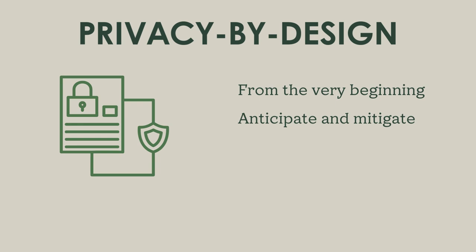One of the main objectives of privacy by design is to ensure that personal information is collected and processed in the least invasive way possible. For example, when developing a new system or service that involves the collection of personal information, the organization must carefully evaluate which pieces of information are actually necessary for the intended purpose, so as to avoid excessive data collection — in line with the GDPR's principle of data minimization. Another important part of privacy by design is ensuring that personal information is securely processed and stored and that only authorized users have access to it, through things like encryption and access control mechanisms — much like in the GDPR, which is in part inspired by privacy by design principles.